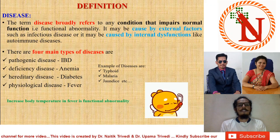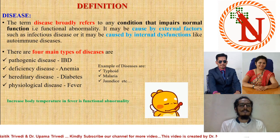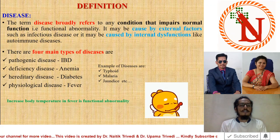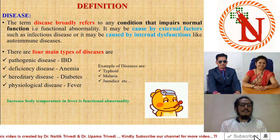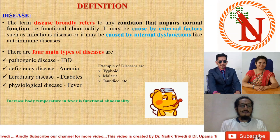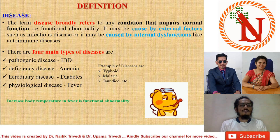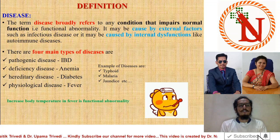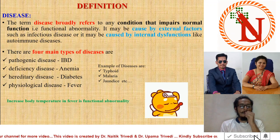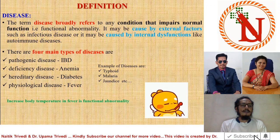Next is deficiency disease. The most familiar example is anemia; you can also include kwashiorkor, marasmus, and vitamin deficiency diseases. Next is hereditary disease — diseases which come from mother or father to their child, meaning genetically inherited diseases, for example diabetes. Next is physiological disease; the most suitable example is fever, where increased body temperature is the functional abnormality. Examples include typhoid, malaria, and joint disease.